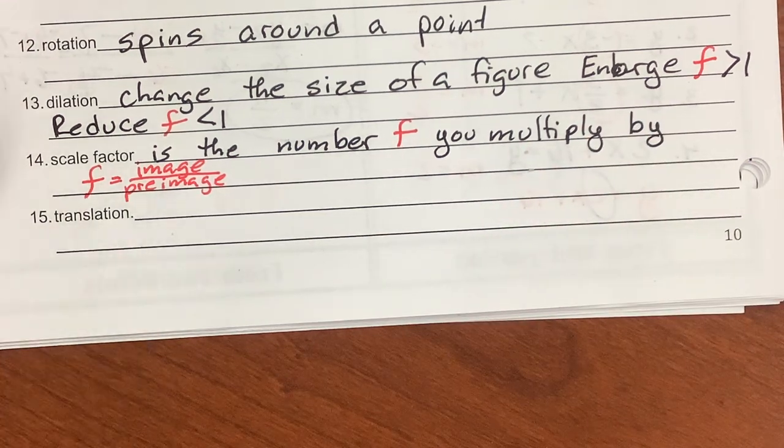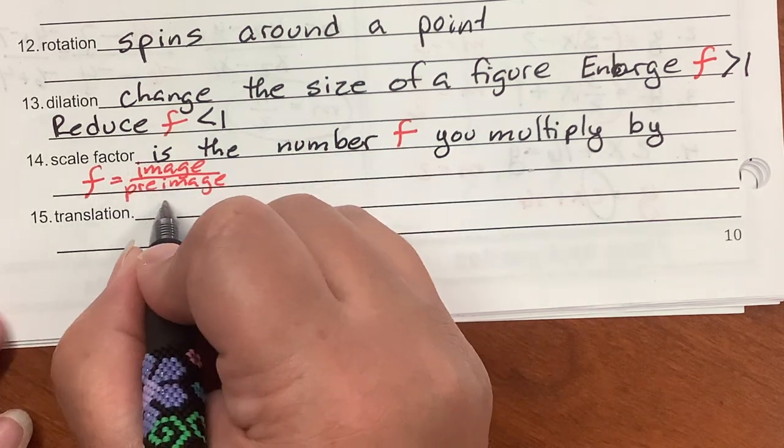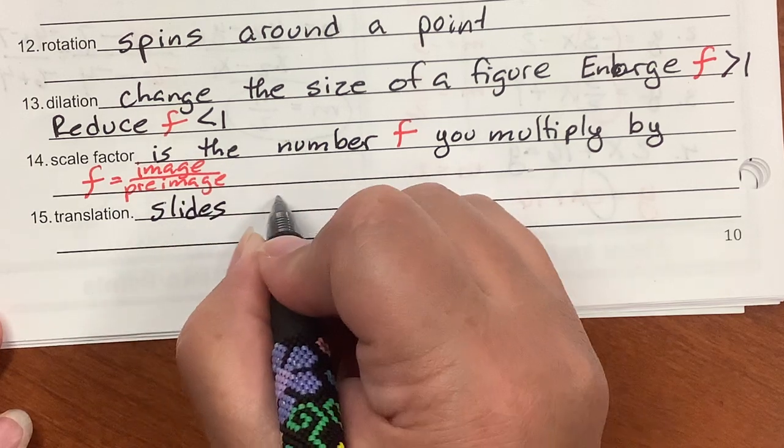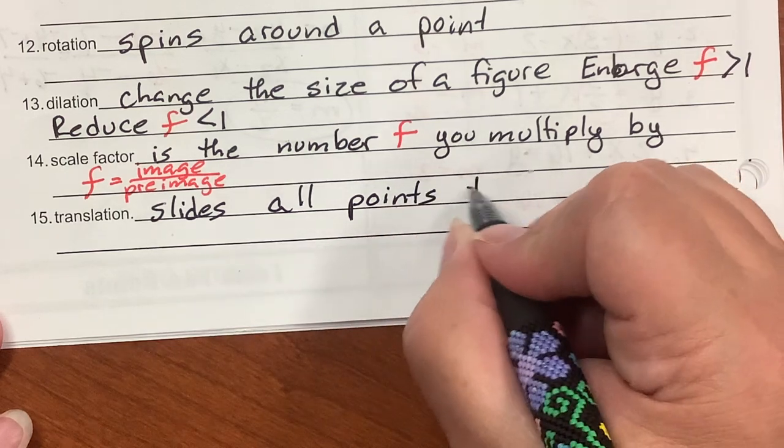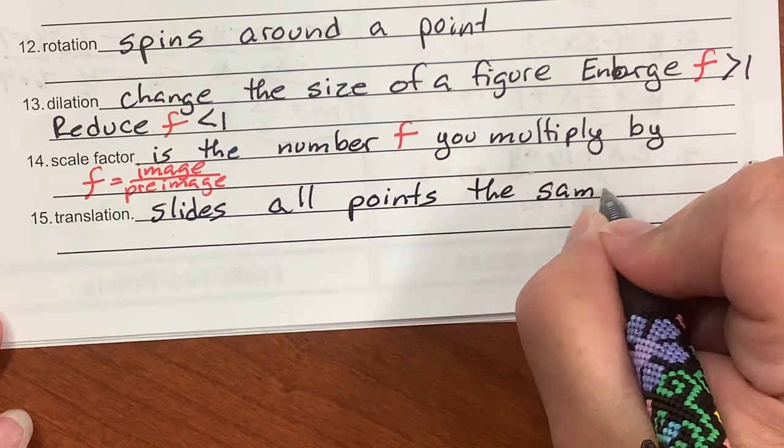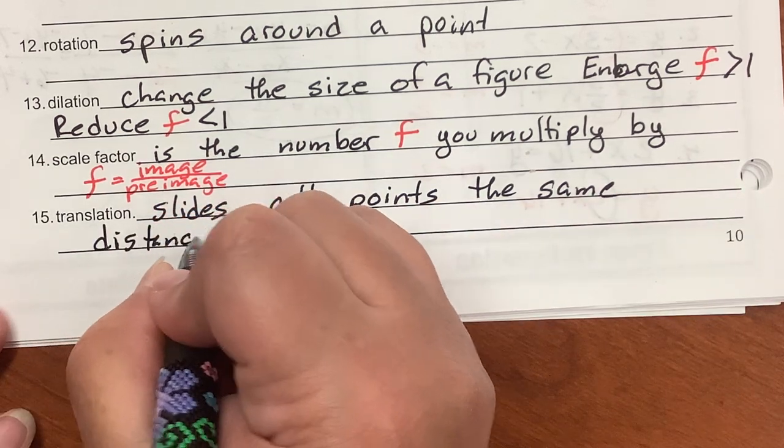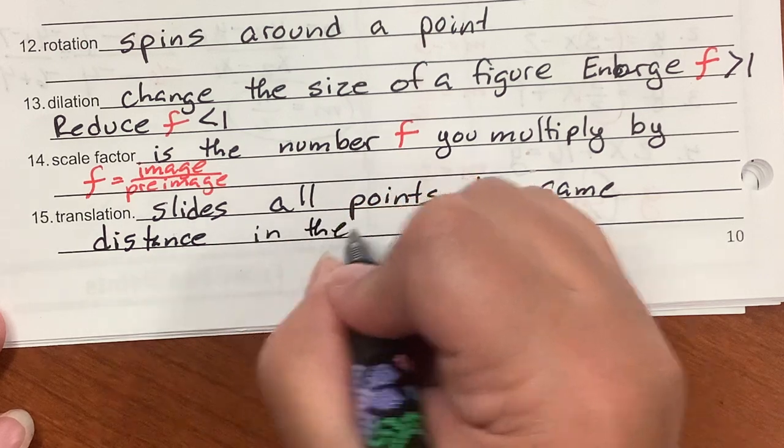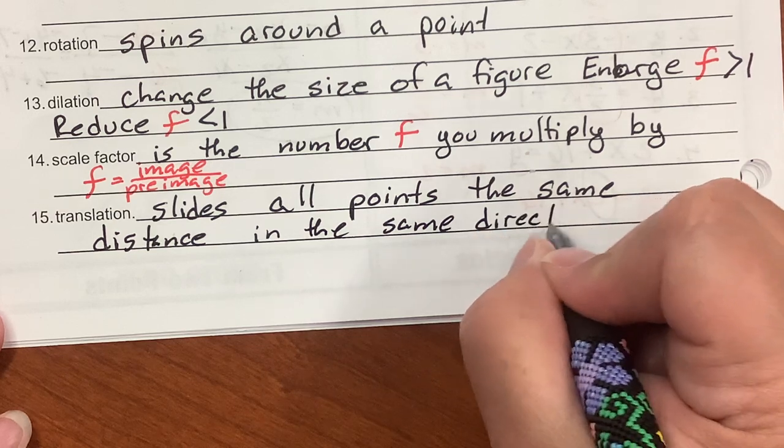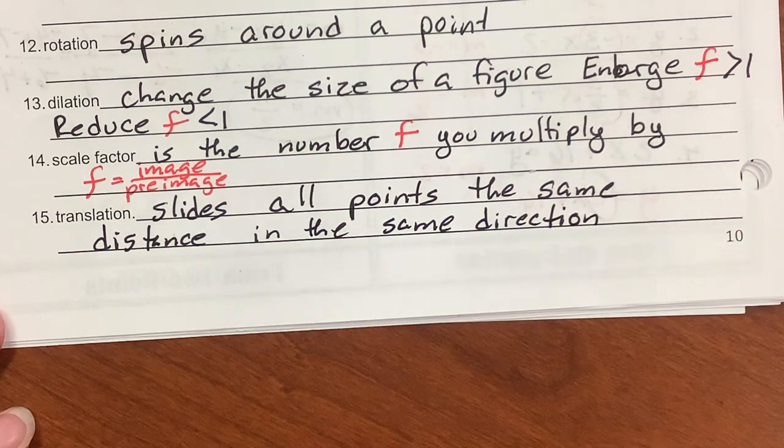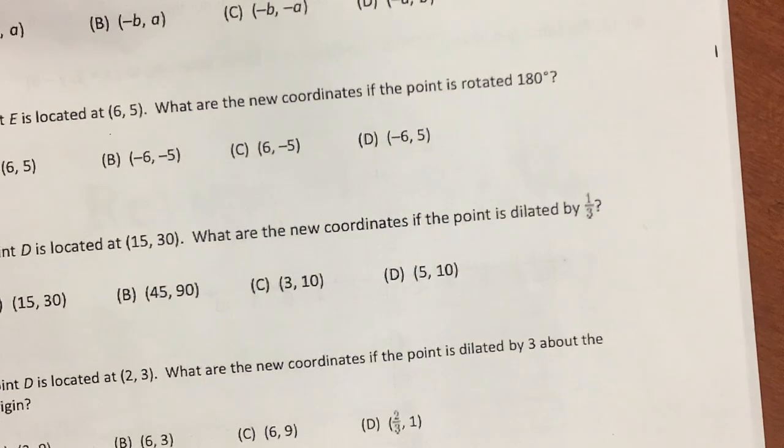A translation is to slide all the points the same distance in the same direction. Now let's take a look at the next page.